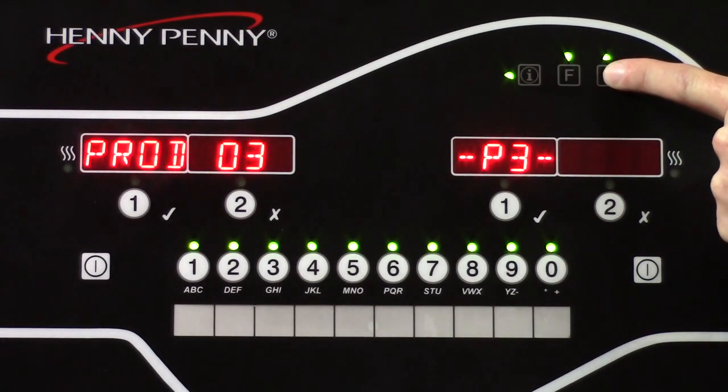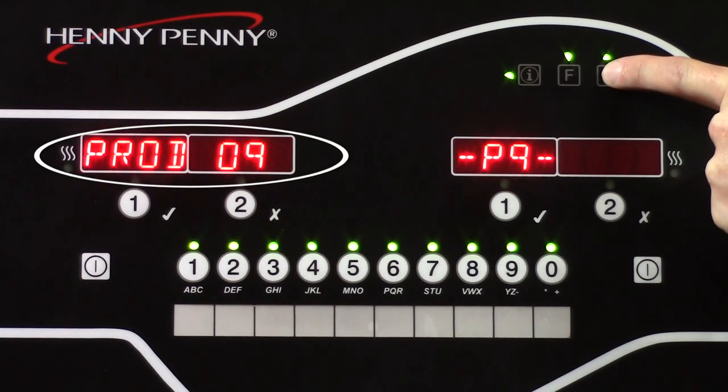Next, scroll through the products until you find an open product. Open products are usually indicated by PROD02, PROD03, etc.